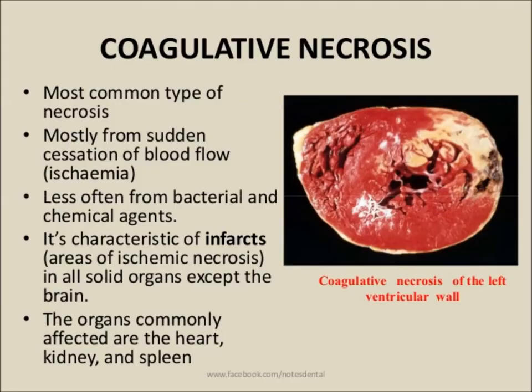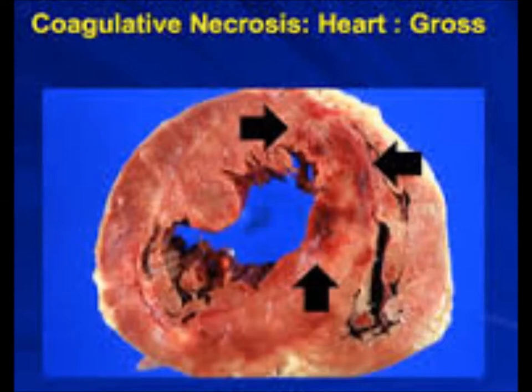This is the cut surface of the heart. You can appreciate two white areas in the left myocardium. They are pale, white, and involving the whole thickness of the left ventricle. There is another gross specimen showing a depressed area with a hyperemic border around the yellow-whitish necrosed myocardium.